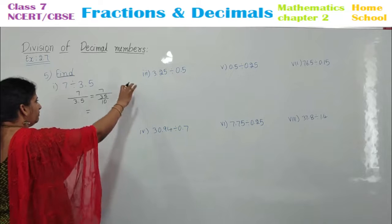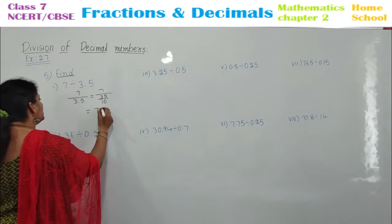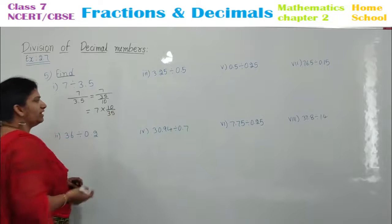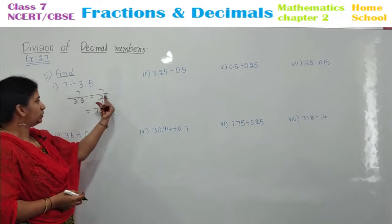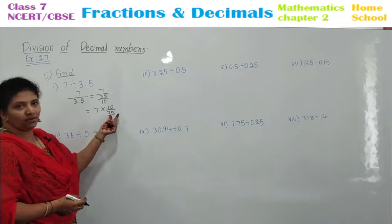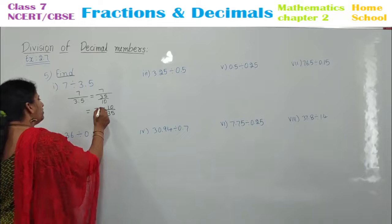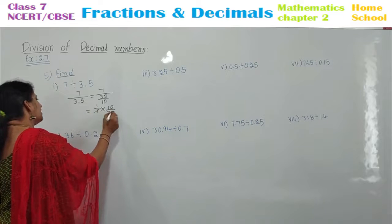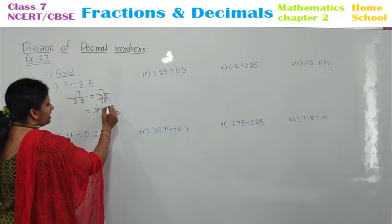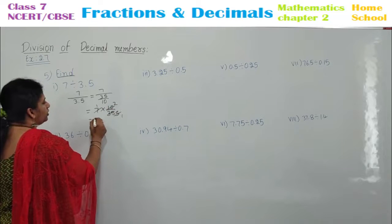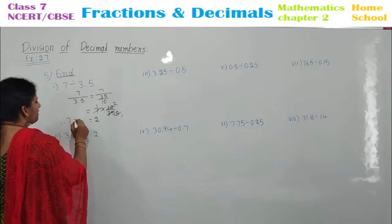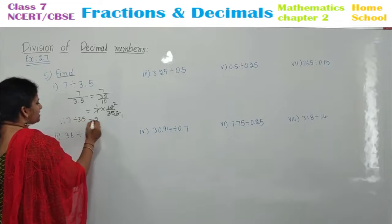This 35 by 10 — bring it upward: 7 into 10 by 35. How can you bring it upward? Do the reciprocal. 35 by 10 becomes 10 by 35, and multiply. You can cancel: 7 ones are 7, and 5 twos are 10. Your answer is 2. Therefore, 7 divided by 3.5 is equal to 2.